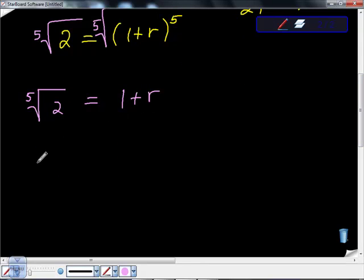So we'll subtract 1 from both sides, and we'll get the fifth root of 2 minus 1 is equal to r. If you're a math major, a bio major, a chemistry major, leave it like this. This is the answer the way your professor would like it.